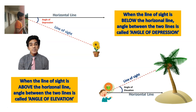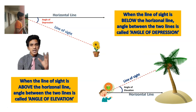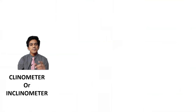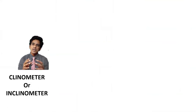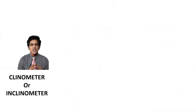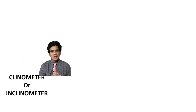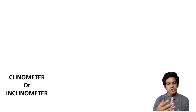There are instruments to measure these angles — they are called inclinometers or clinometers. These are used when you want to measure the height of a tall building or the height of a mountain.